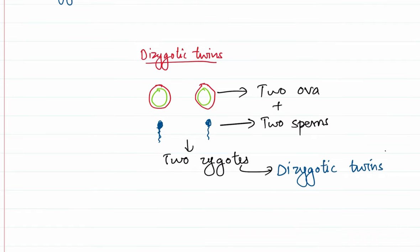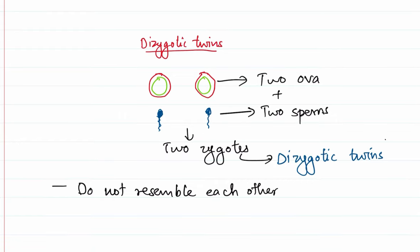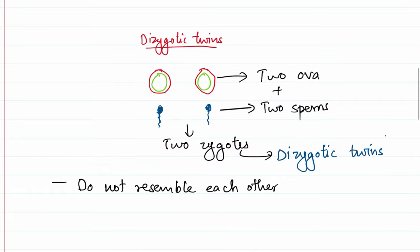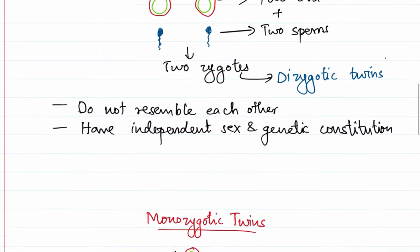Since they are developed from two separate zygotes, these twins do not resemble each other. Also, the sperm which penetrates the ovum could carry an X or Y chromosome, so they need not necessarily be of the same sex. These dizygotic twins have independent sex and genetic constitution. That is why these twins may not have any similarity to each other, even though they are twins. Such twins are called paternal twins.